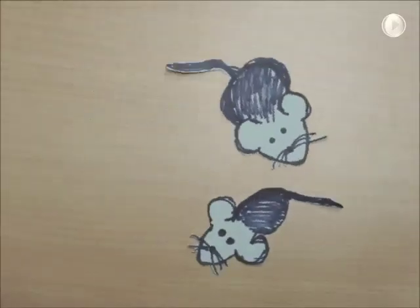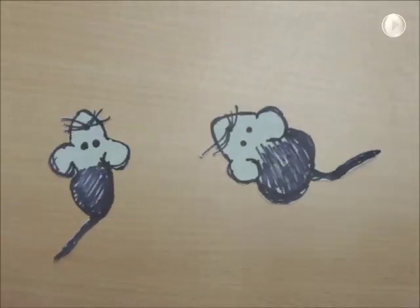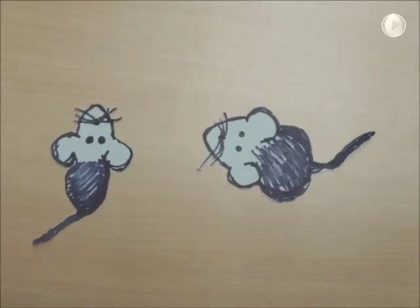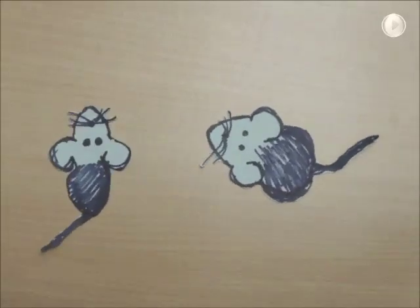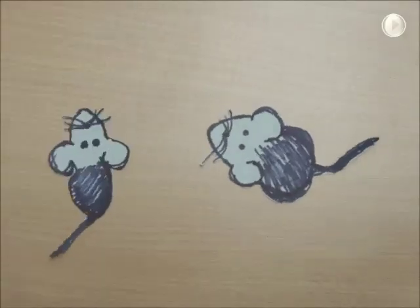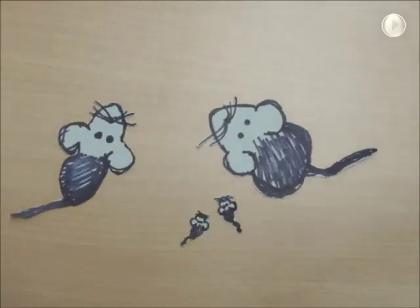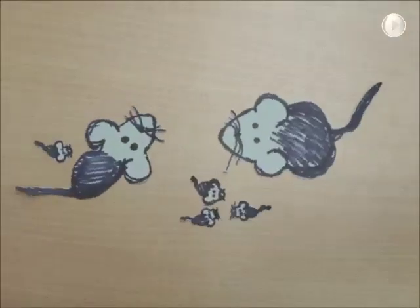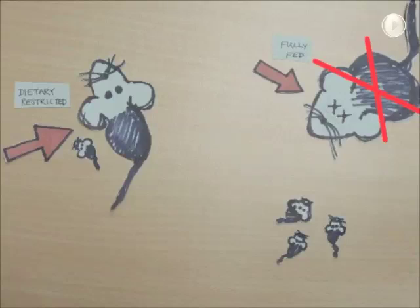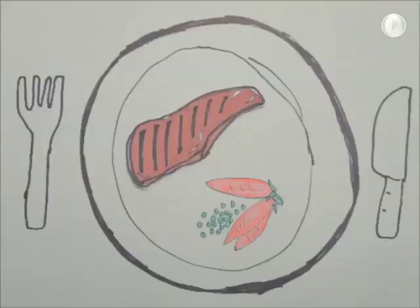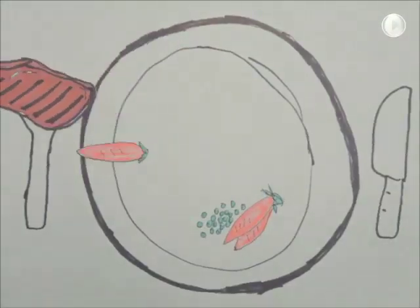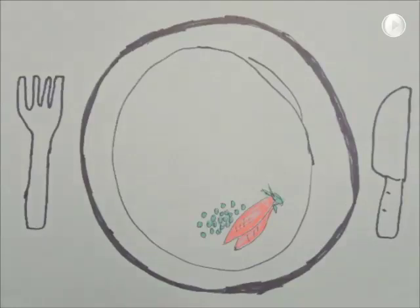Scientists severely reduced food intake in dietary restricted groups of laboratory rodents, like the skinny one on the left, while giving others like the one on the right a normal or full feeding diet. Although the fully fed groups reproduced more, the scientists were surprised and intrigued to discover that they also died sooner — raising dietary restriction as a possible means to prolong lifespan in humans as well.